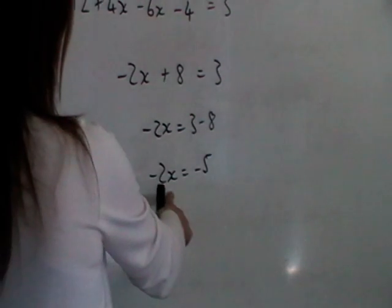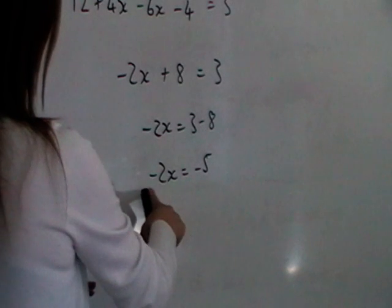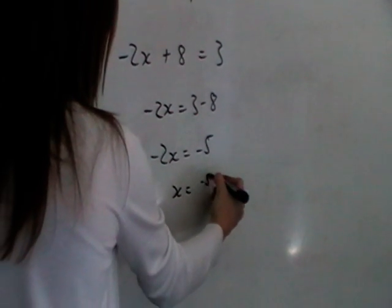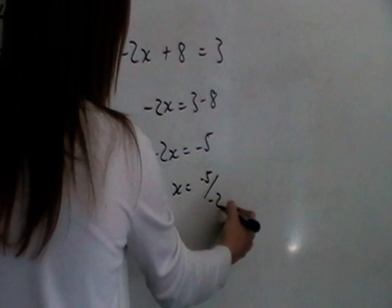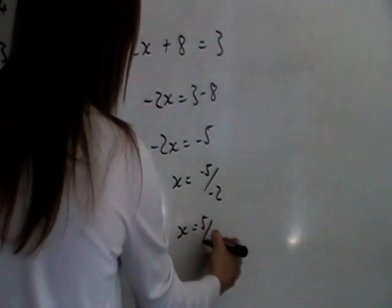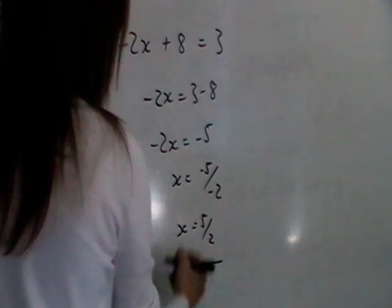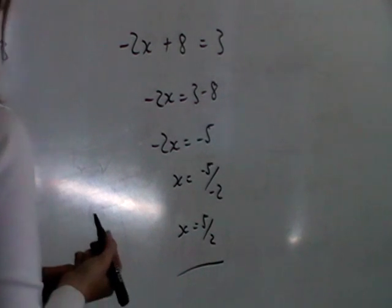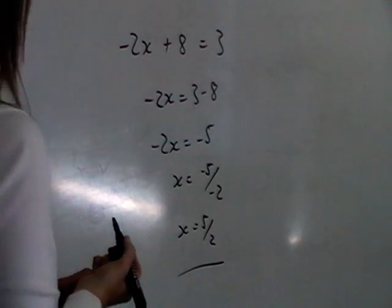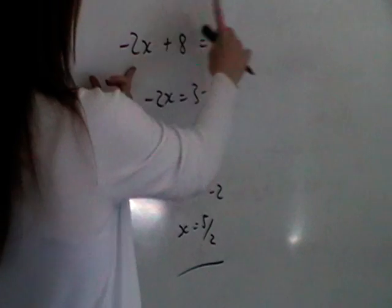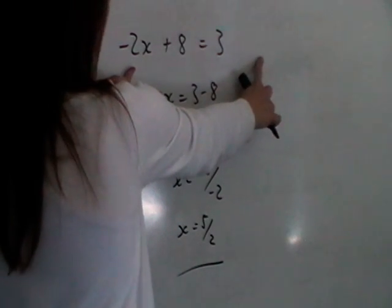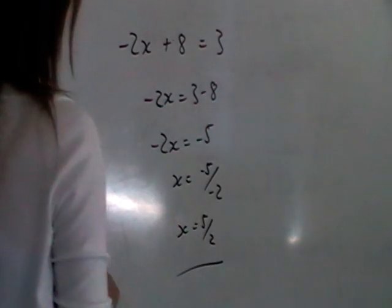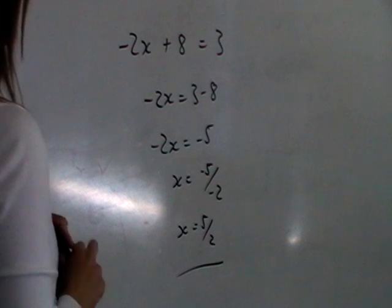Now again, to get x on its own, we need to divide both sides by minus 2. So you get minus 5 divided by minus 2. A negative divided by a negative is positive, so you just get positive 2 and a half. If you wish to avoid the negatives, you could have taken that over at this stage to get a plus 2x, but you would still end up with the same answer.